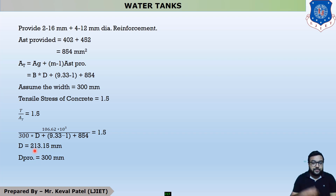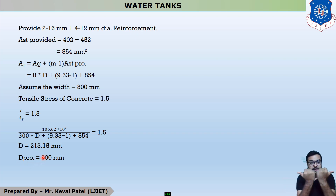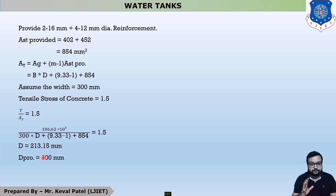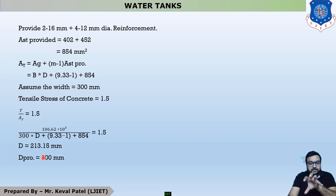We provide a value larger than required, so D_provided = 300 mm, because water pressure is acting on this side. We provide minimum 300 mm width and 300 mm depth of beam, as per the minimum criteria of the recent earthquake resistance code. This completes the size and reinforcement for the top ring beam design.